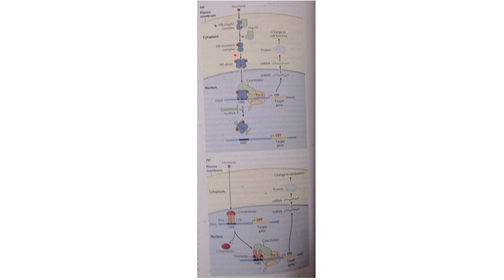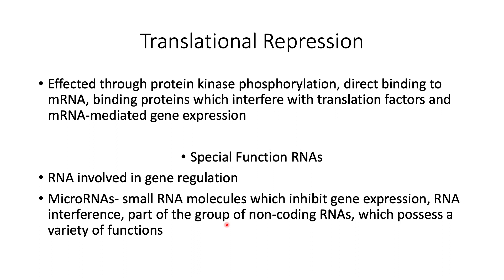There are monomeric type 1 structures and type 2 receptors. Type 2 receptors are always in the nucleus, while type 1 can have initial binding in the cytoplasm. Translational repression is affected through protein kinase phosphorylation, direct binding to messenger RNA binding proteins which interfere with translation factors, and messenger RNA-mediated gene expression. Special function RNAs are involved in gene regulation, including micro RNAs, which are small RNA molecules that inhibit gene expression, and RNA interference. These are part of the group of non-coding RNAs which possess a variety of functions.